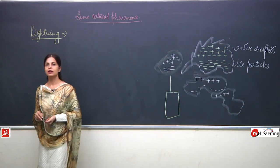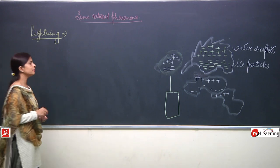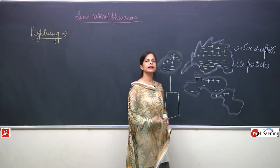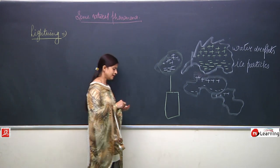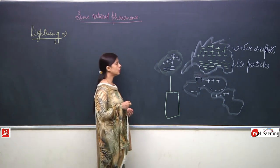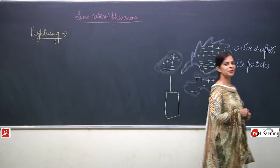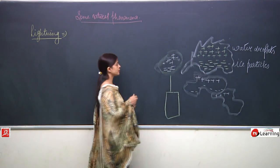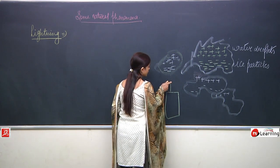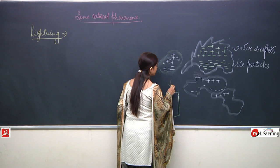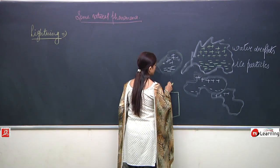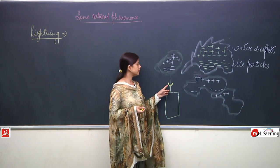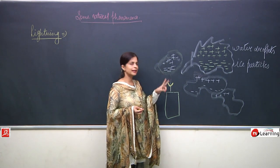So now we will talk about the lightning conductor. What is a lightning conductor? It is a good conductor of metal — a good conductor of electricity — which is attached to the highest point of a building. The lightning conductor has sharp, forked edges.